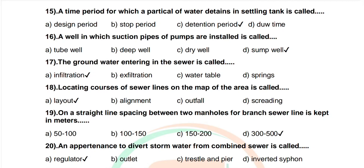Question 16: A well in which suction pipe of pumps is installed is called — options: tube well, deep well, dry well, sump well. Correct answer: sump well. Question 17: Groundwater entering into the sewer is called — options: infiltration, exfiltration, water table, springs. Correct answer: infiltration.